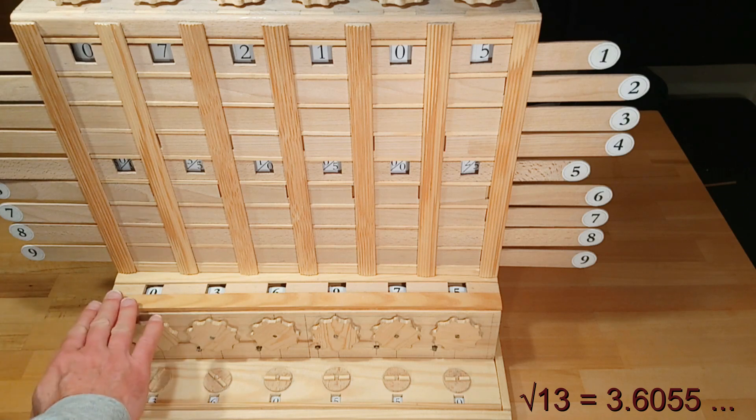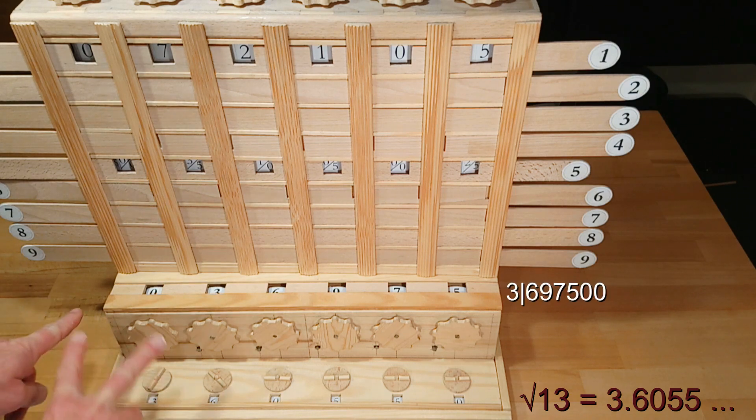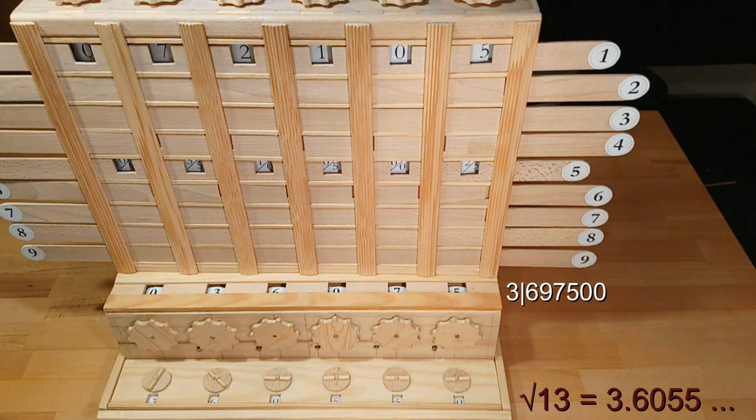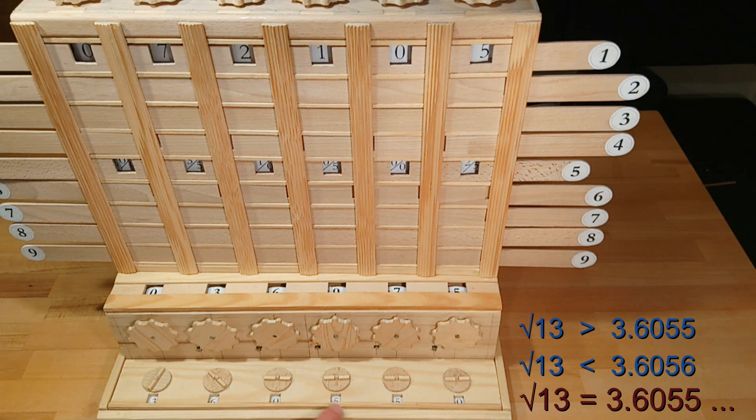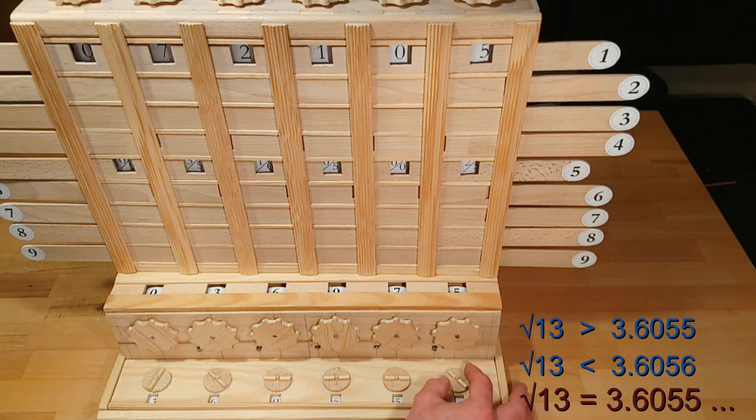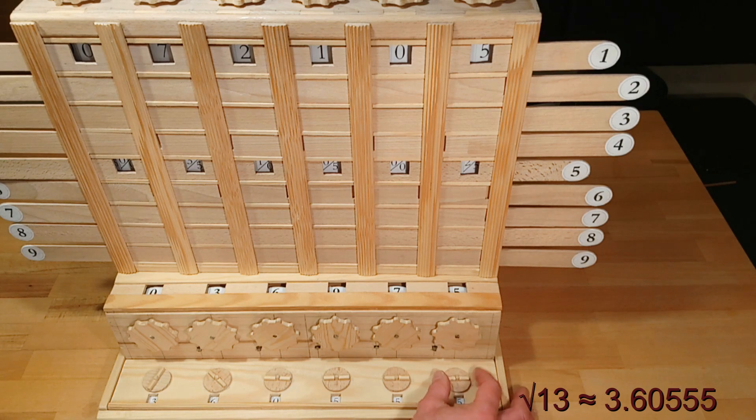For the calculation of the next decimal place we would have to shift that two places to the left which would result in a seven digit number. But we only have six places available in this old calculator. We cannot calculate any further now. Since we still have a remainder, the result of square root 13 is slightly greater than 3.6055 but also less than 3.6056. We assume the middle of both boundaries. That's 3.6055, which is our result of square root 13.